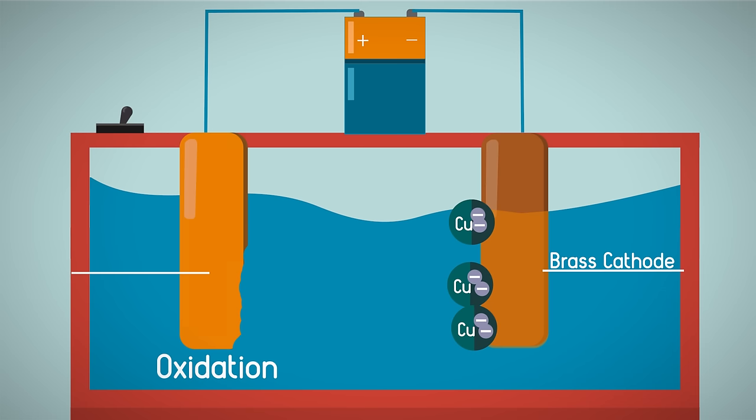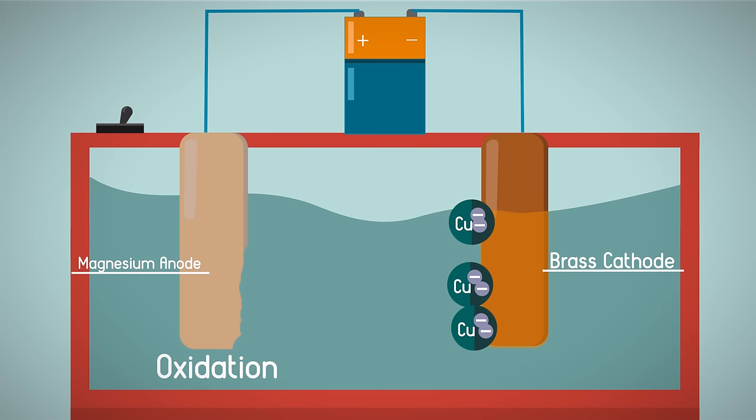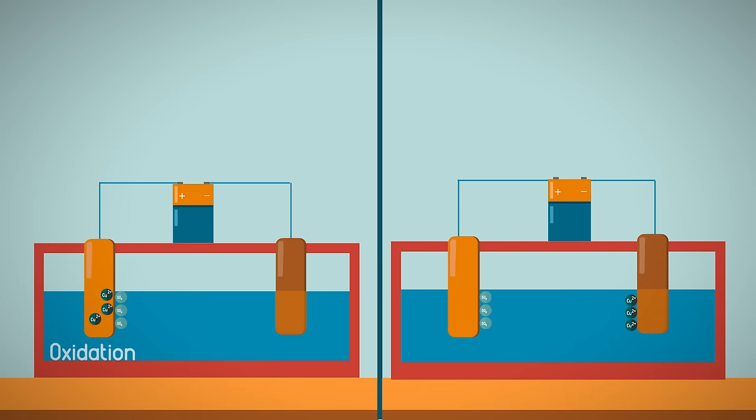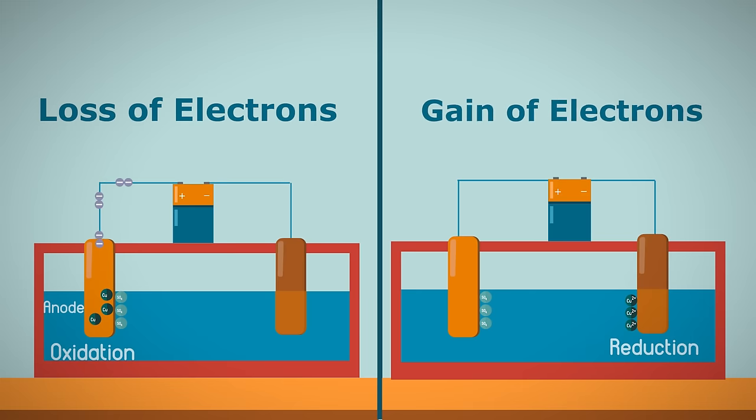If another metal was used at the anode, then the copper sulfate solution would get paler or less concentrated. So just remember that oxidation, the loss of electrons, takes place at the anode, and reduction, the gain of electrons, takes place at the cathode.